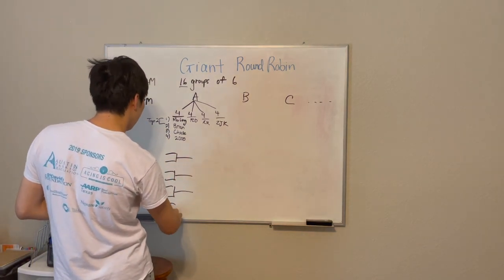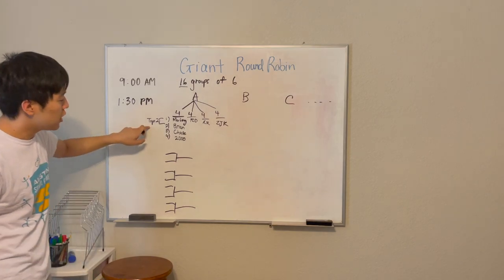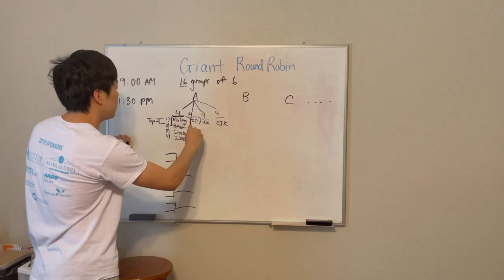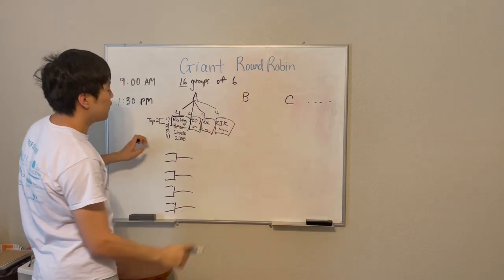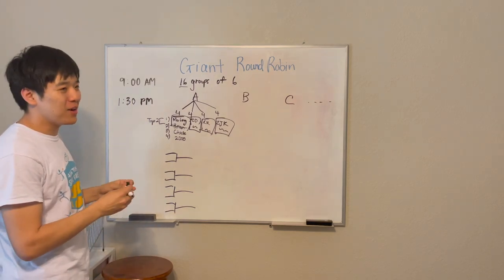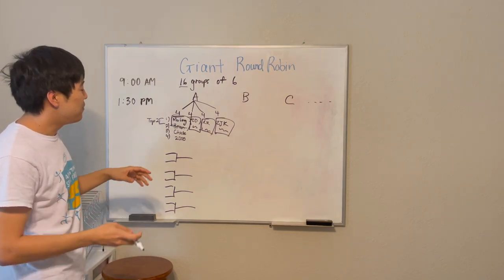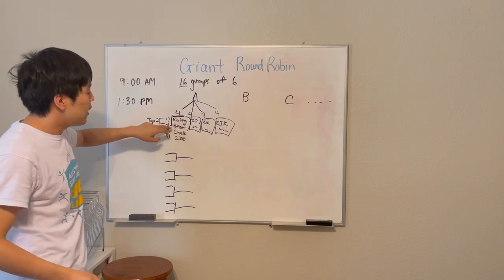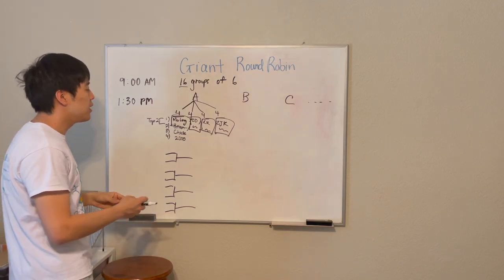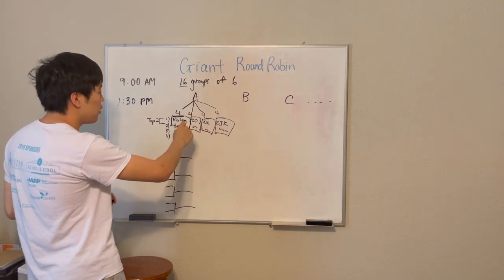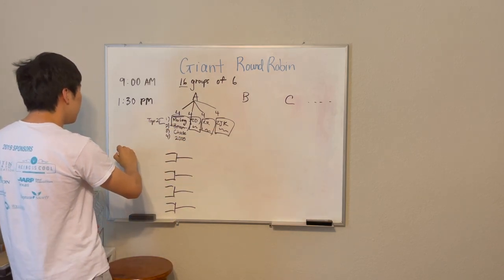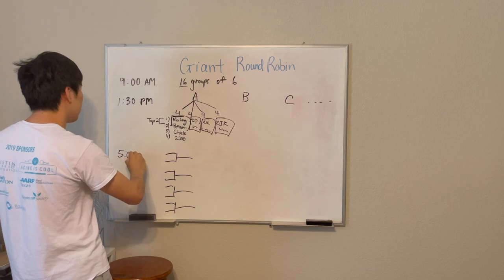If the top two advance in each of these groups, there will be two players advancing from each group into the single elimination and this would start around five o'clock p.m.